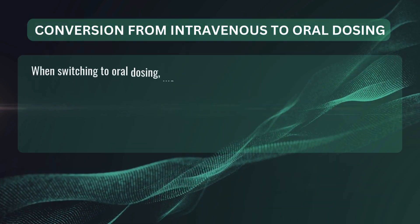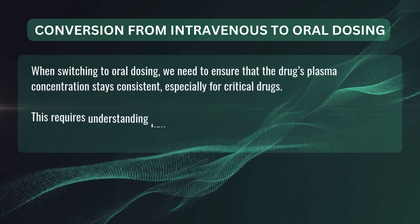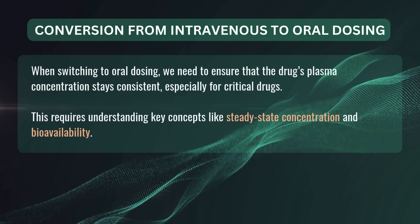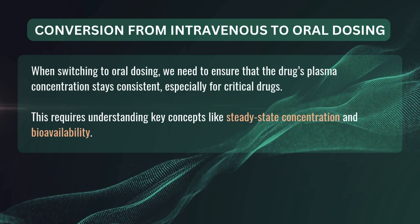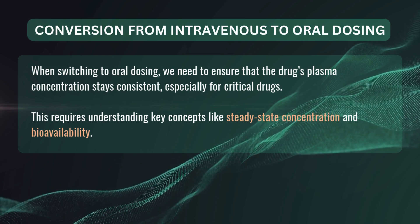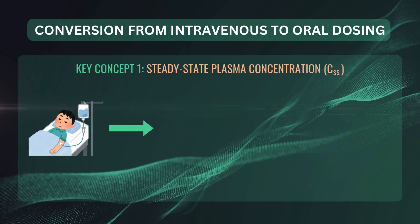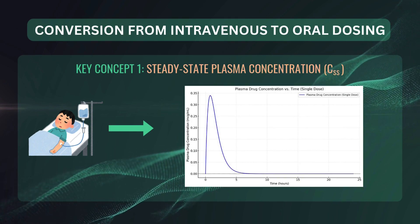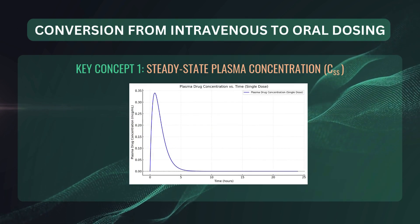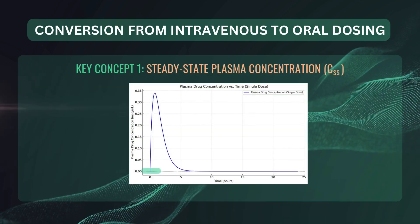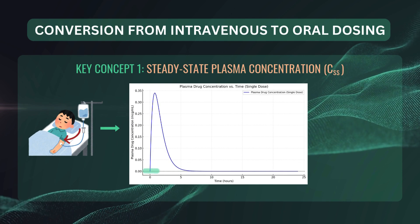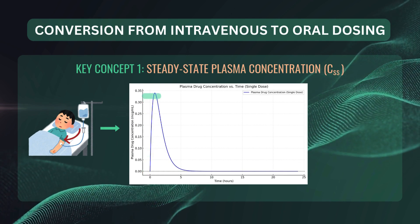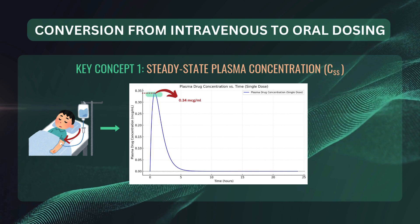When switching to oral dosing, we need to ensure that the drug's plasma concentration stays consistent, especially for critical drugs. This requires understanding key concepts like steady-state concentration and bioavailability. If we are giving an IV infusion to a patient, the plasma drug concentration versus time looks like this. Initially, the concentration starts at 0. As the infusion begins, the drug enters the body and the concentration rises steadily until it reaches a peak — in this case, 0.34 micrograms per ml.